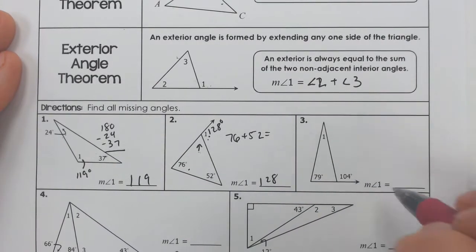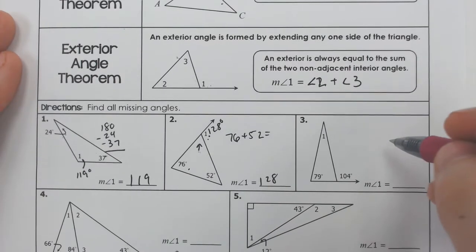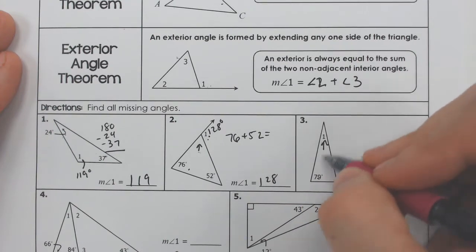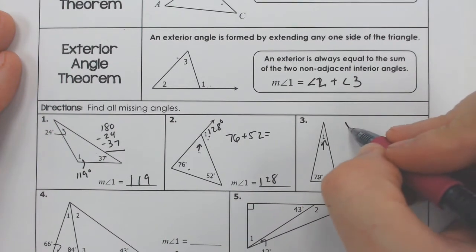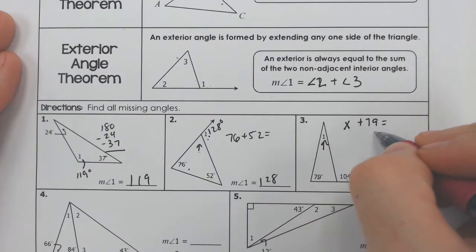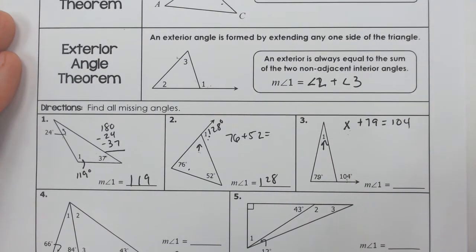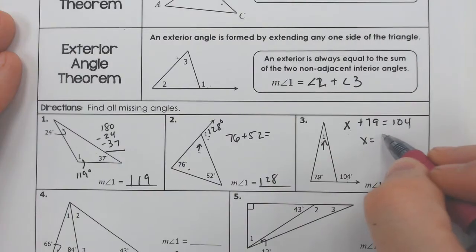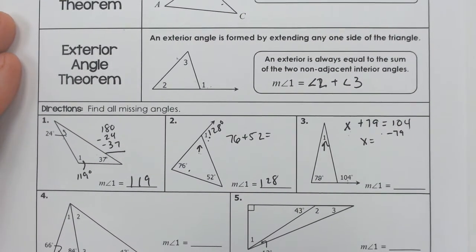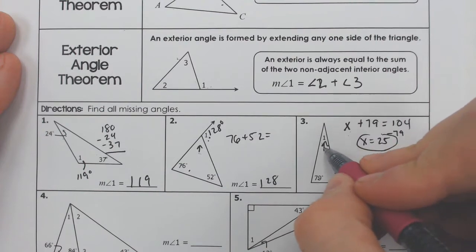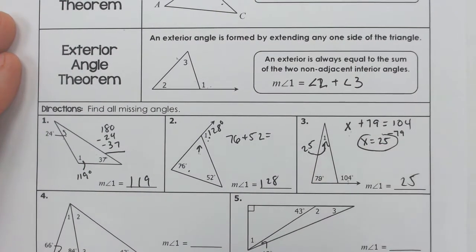Number three is another exterior angle problem, but number three is a little bit different because we were missing the inside part, not the outside part. But we do know that the inside parts would have to add to equal 104. So I'm calling angle one x, and what do I have to add with 79 to get to equal 104? So all I have to do is subtract 79 from 104, and I'll get angle one. And in this case, that is 25 degrees.